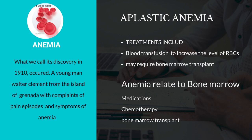Number 4, pernicious anemia. Options are: Number 1, blood transfusion, which is a way to increase the level of red blood cells. Number 2, it may require a bone marrow transplant.